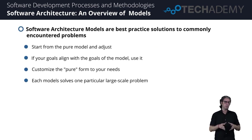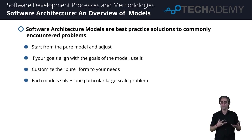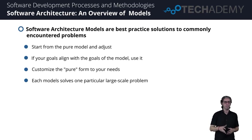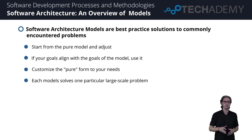The software architecture models are best practice solutions. We try to explain them through a few examples. There are various architectural models that can be used to find the solution for the problem — they are potentially code frameworks which help us to build one of these architectural models.